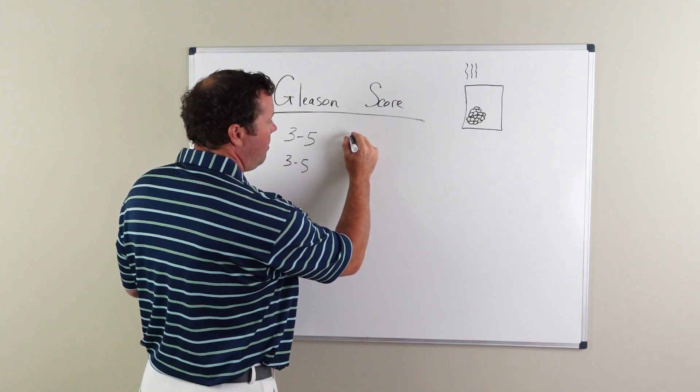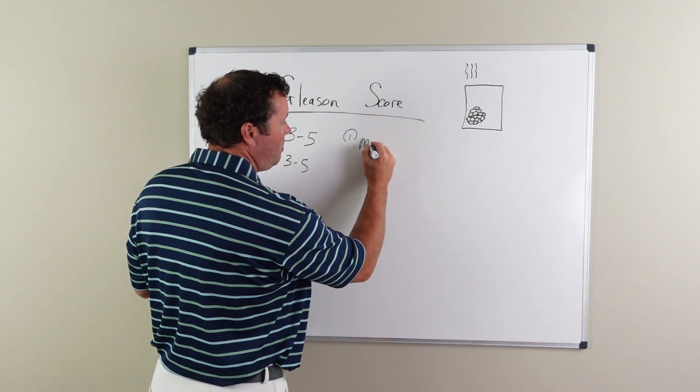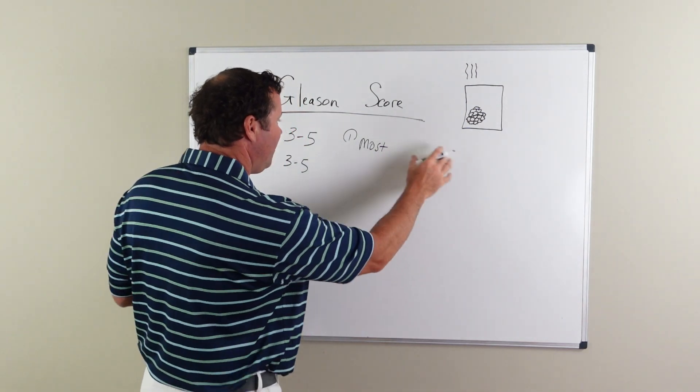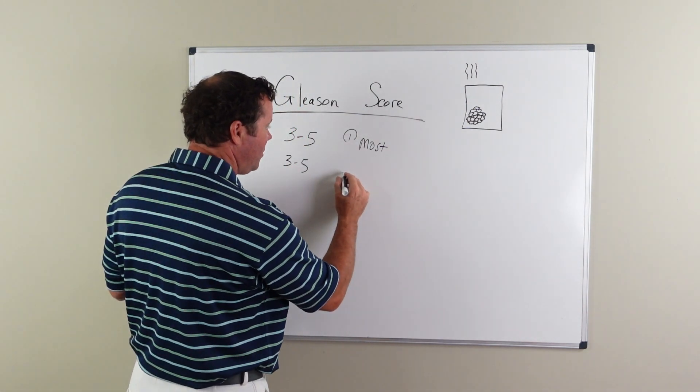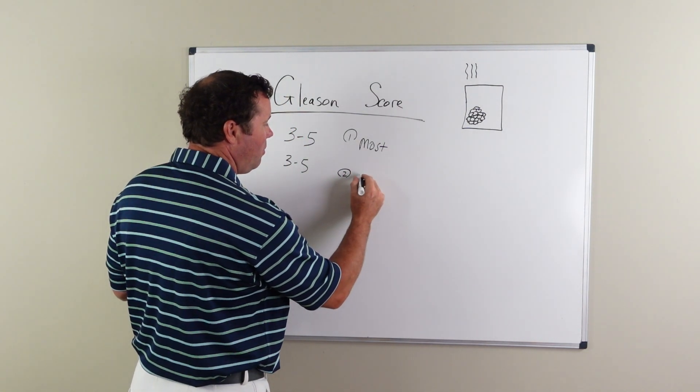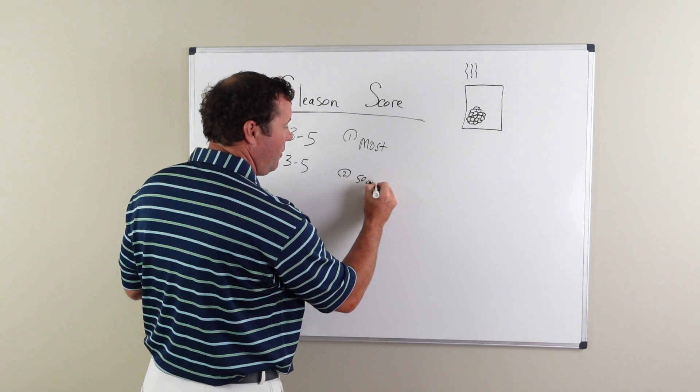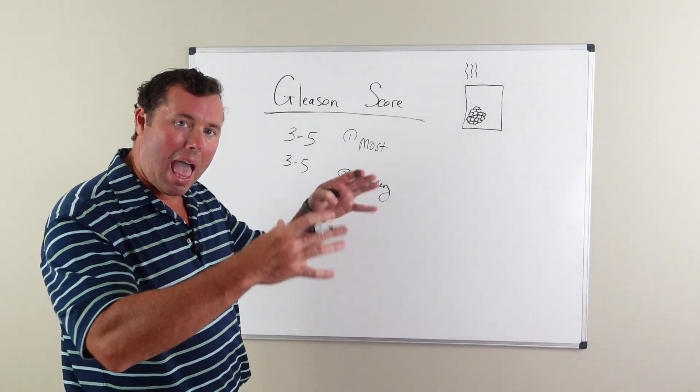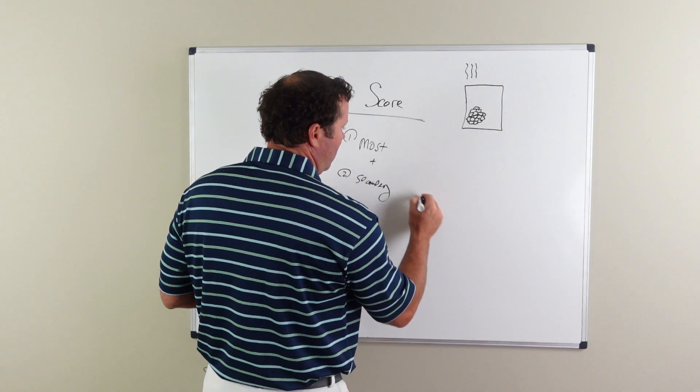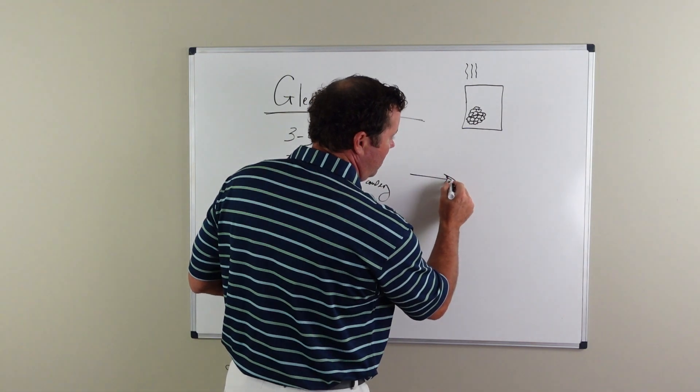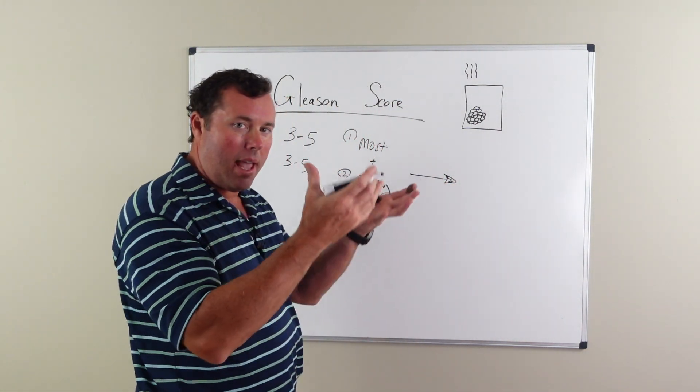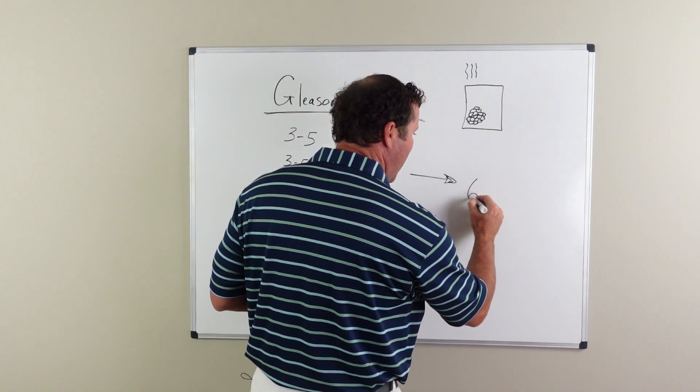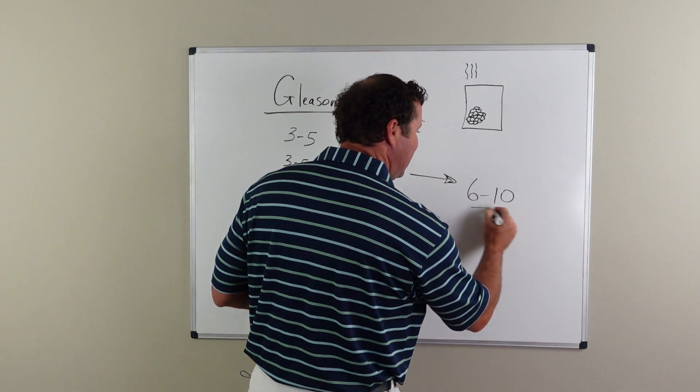The first number is the most predominant or the cancer that has the most volume. That will be the first number and the second number will be the secondary type of cancer that's present, and these two numbers are added together to give a total Gleason score. And this is a number that ranges between six and ten.